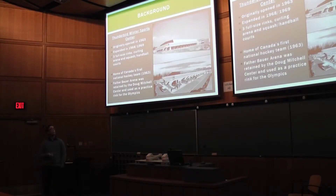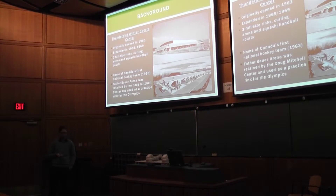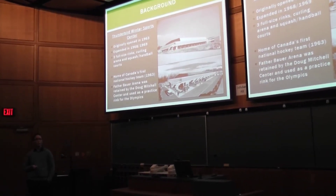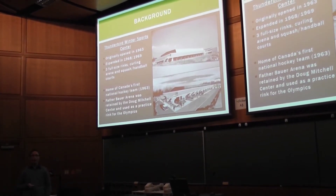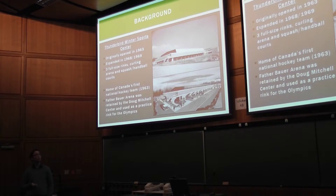The final building is the original Thunderbird Winter Sports Centre, originally opened in 1963 and later expanded in 1968–1969. In total it included three full-size ice rinks, a curling arena, and squash and handball courts. Notably, the building was home to Canada's first national hockey team. The Father Bauer Arena was retained by the new structure.